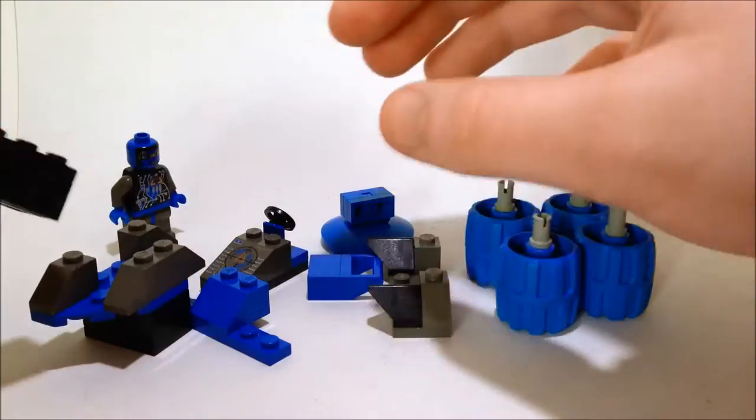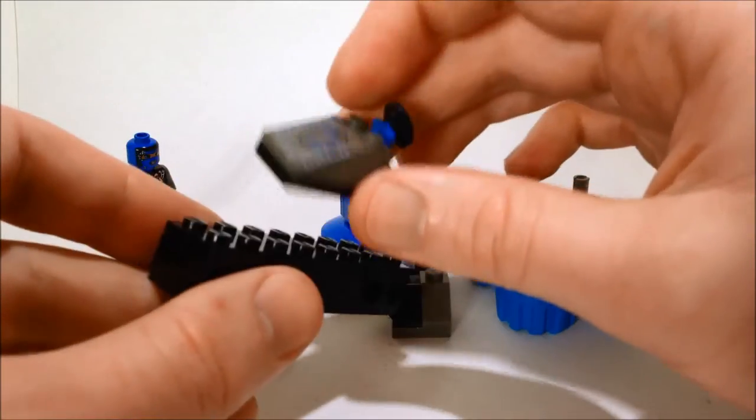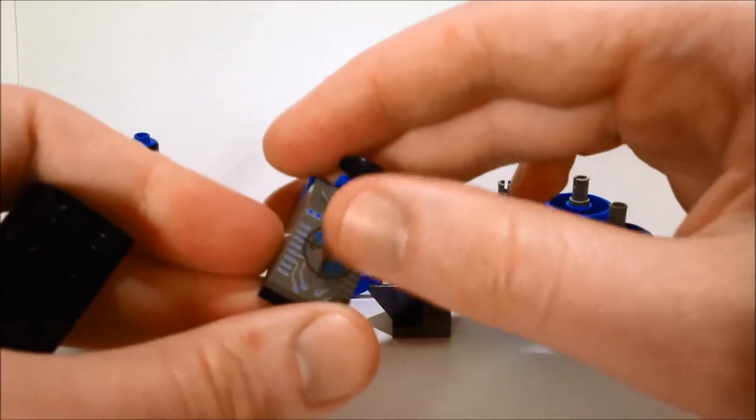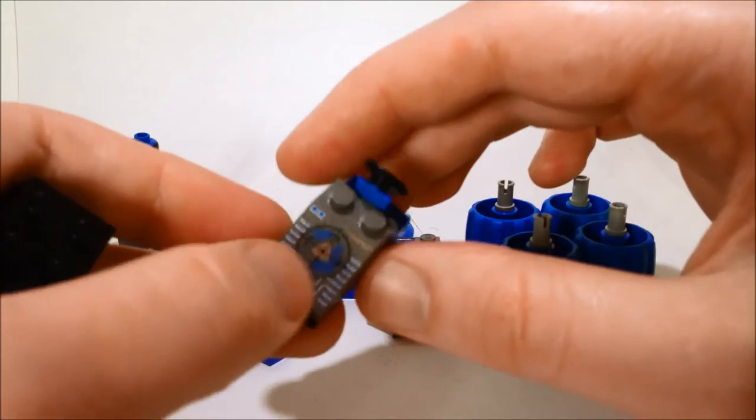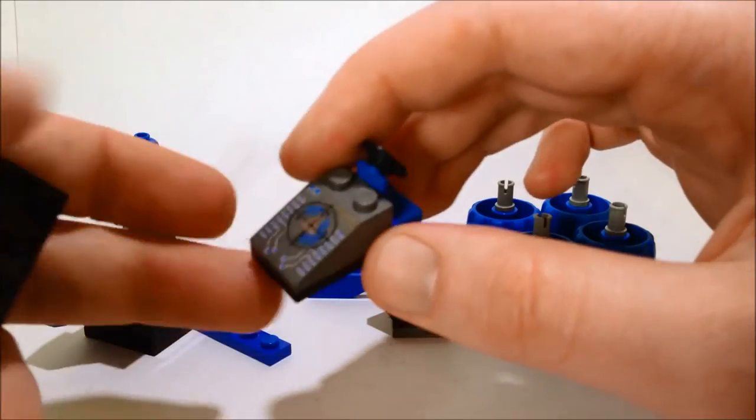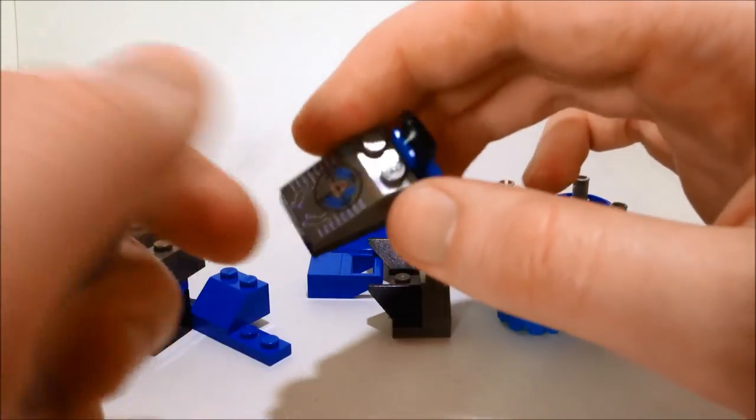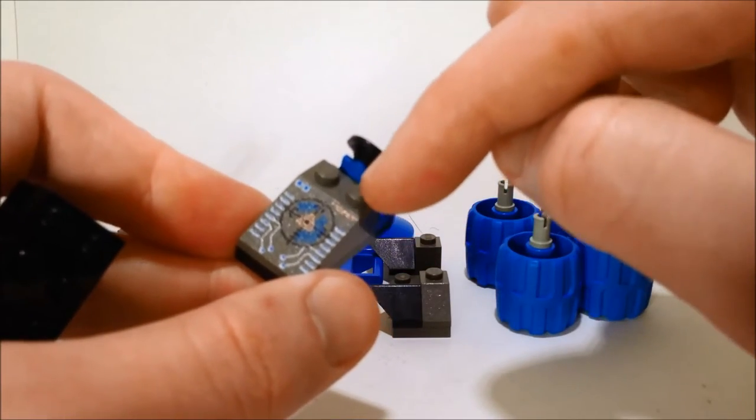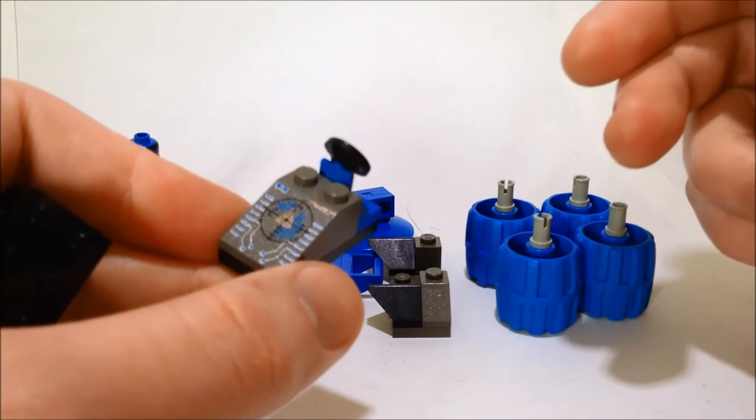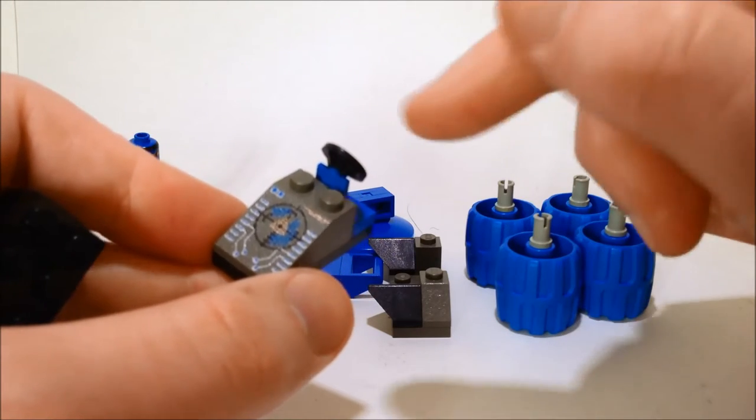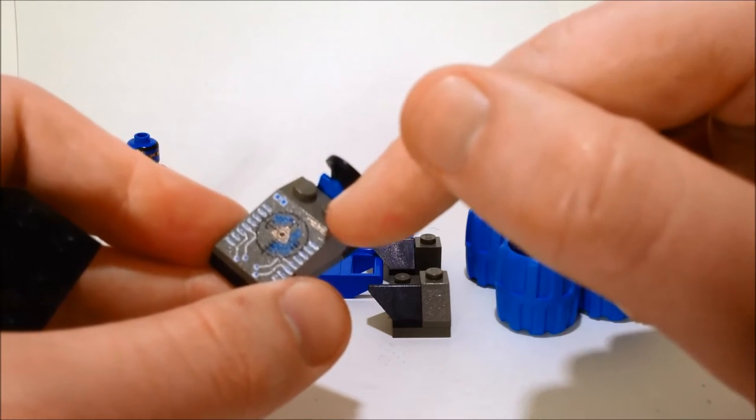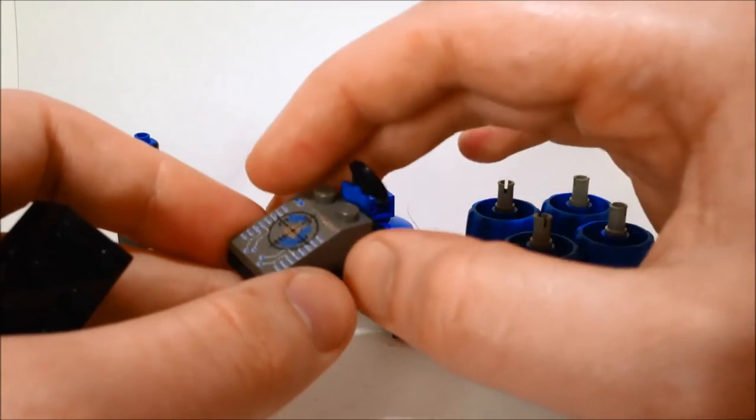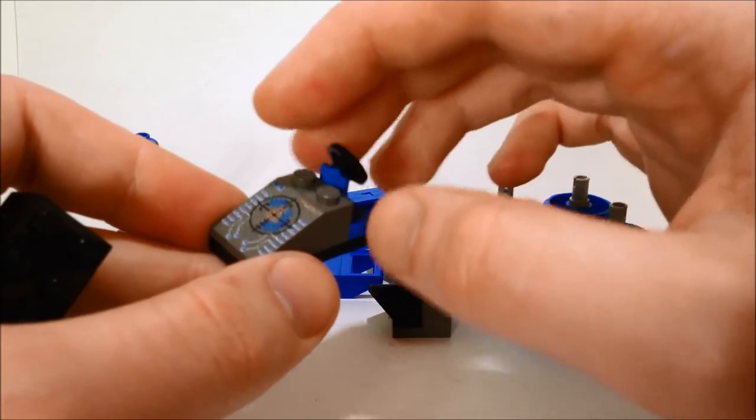So to start we have the front piece which is just a 2x4 with the Insectoids dark grey pattern on this slope piece, which unfortunately was only ever printed on dark grey. This is the part I was talking about in one of my other videos where if you were to try and replicate all of these cars in newer colors, this would be the only downside because it's the only part which isn't made in new dark grey or dark bluish grey.